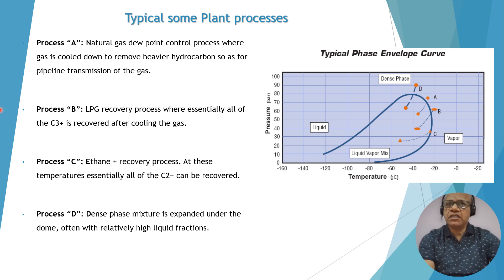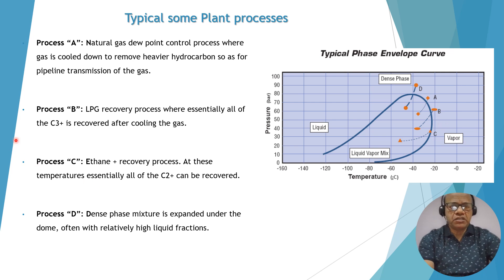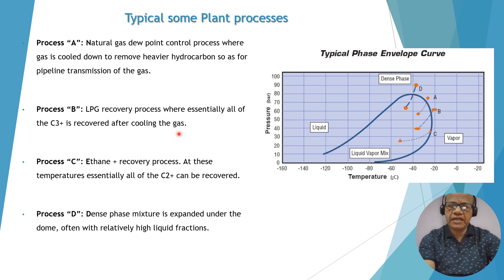Process A is the dew point control process, where gas is cooled down to remove heavier hydrocarbons so that gas can be sent through the pipeline. The expansion in process A is relatively smaller. Process B is the LPG recovery process, where essentially all the C3+ is recovered after the cooling of the gas.